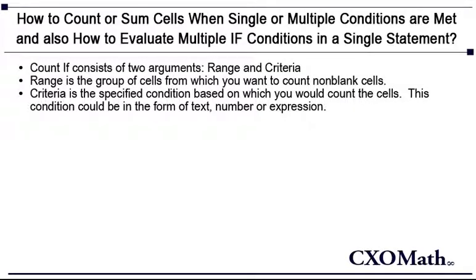Now let's look at the syntax for these functions. Let's look at COUNTIF first. COUNTIF consists of two arguments: range and criteria. Range is a group of cells from which you want to count non-blank cells. Criteria is a specified condition based on which you would count the cells. This condition could be in the form of text, number, or expression.